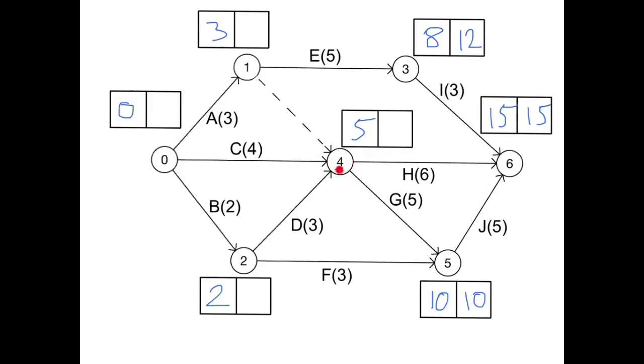For event 4, if we did 15 minus 6, that would mean we could be at event 4 as late as 9. However, if we did that, we then wouldn't have enough time to do G and J and still be at event 6 at 15, because we'd have 9, 14, 19 as our finish time. So whilst coming along this path would give us 9, we actually need to look at this one and giving us a latest time of 5. We're looking for the minimum value when we're finding those latest times.